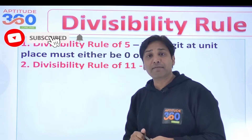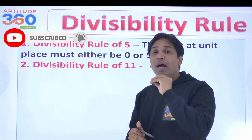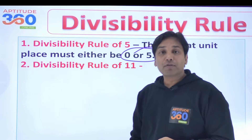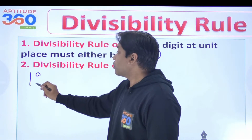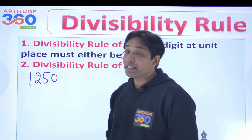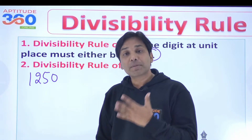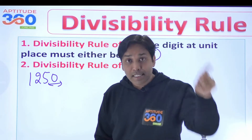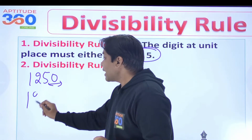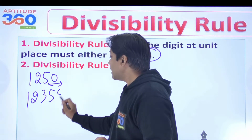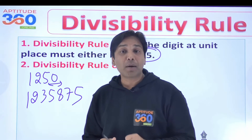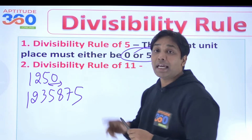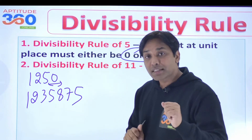What is the divisibility rule of 5? It is the simplest one. Look at the last digit — it has to be either 0 or 5. So 1,2,5,0 is divisible by 5 because the last digit is 0. And 1,2,3,5,8,7,5 is also divisible by 5 because the last digit is 5. Check only for 0 or 5 at the end — that's it.